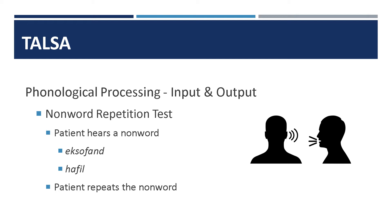The non-word repetition test also assesses language at the phonological level. Here, both input and output processing are examined as the patient repeats non-words, such as exaphan or hafil. Non-words are used because they zero in on phonological processing — no semantic information is needed to complete this task.